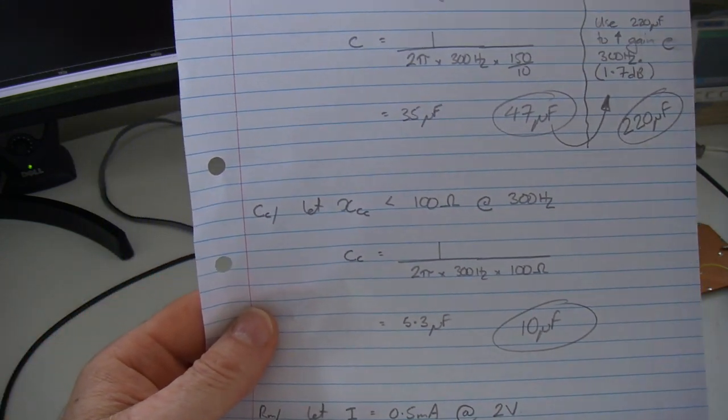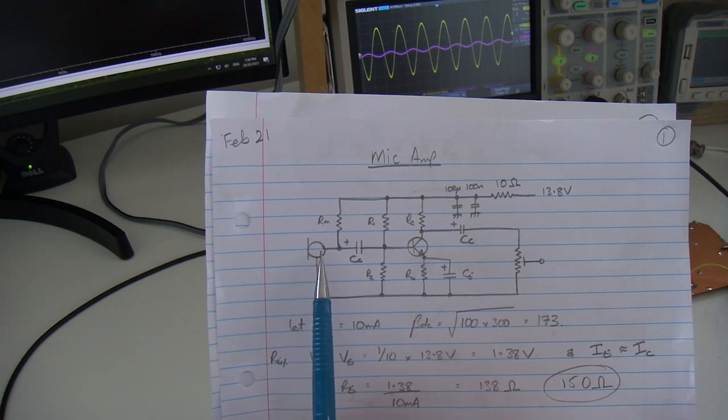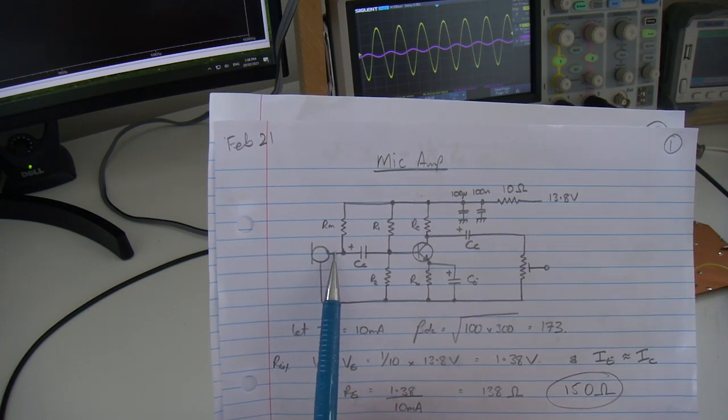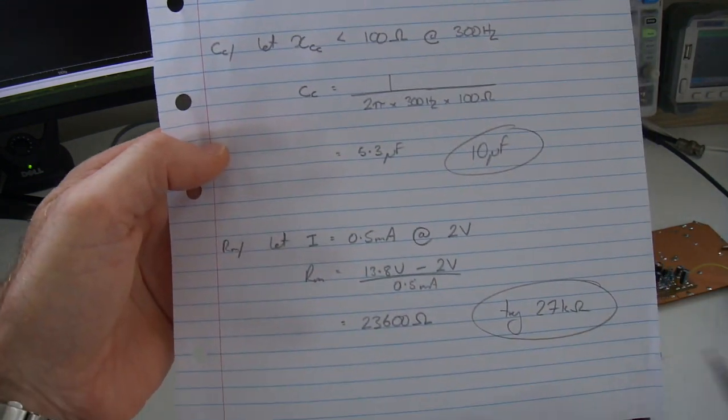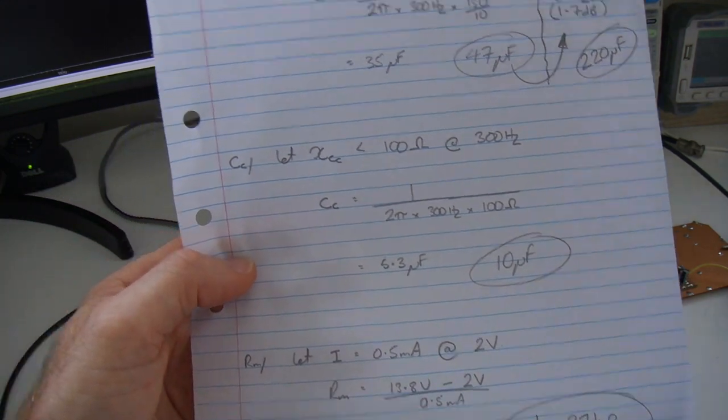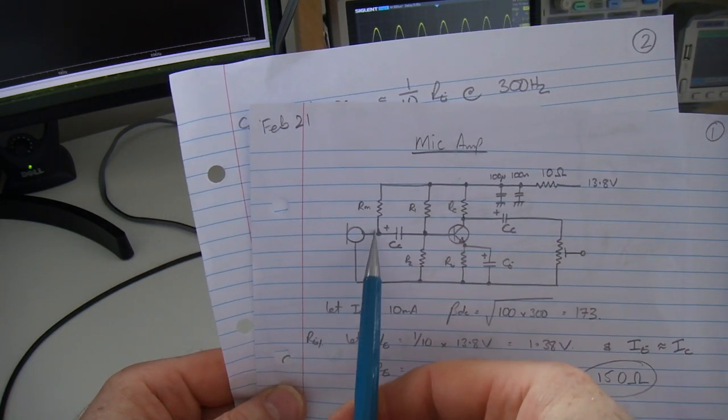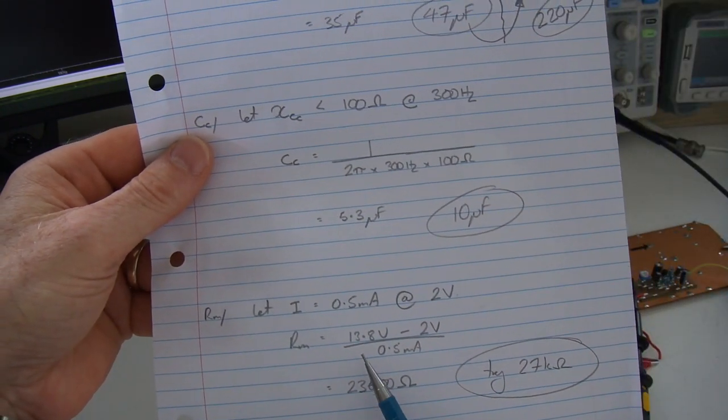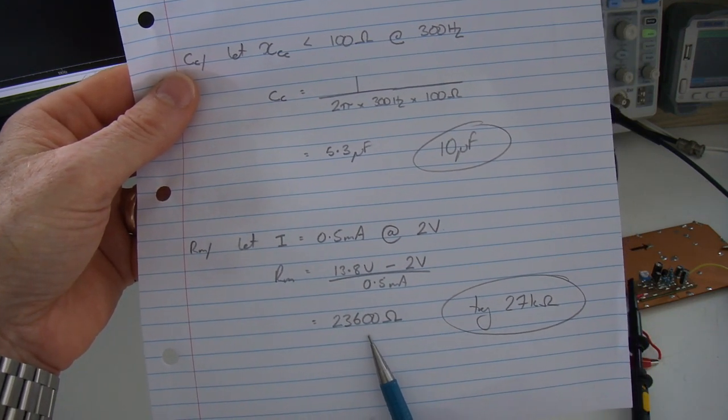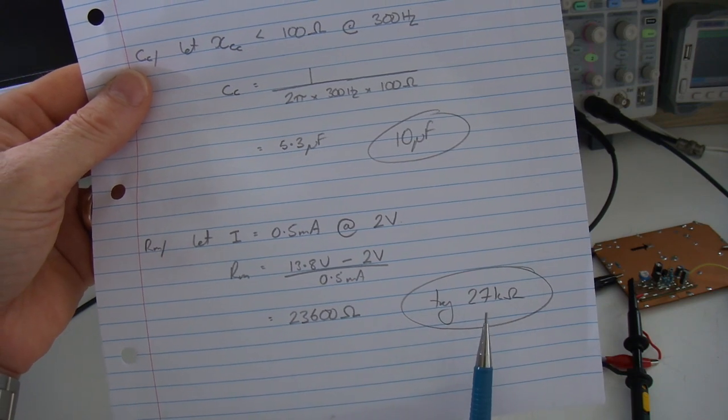The last resistor to be calculated for this particular configuration, I'm going to use an electret microphone. These little microphones from the spec sheet typically require a certain voltage at a certain current through it. In this particular case, I'm going to run with a current of half a milliamp at 2 volts. So 13.8 minus 2 divided by half milliamp equals 23,600 ohms. I'm going to use a 27K ohm resistor.